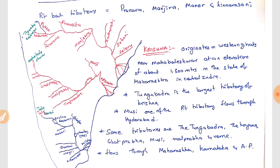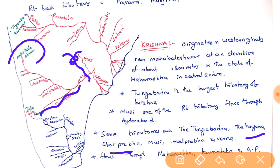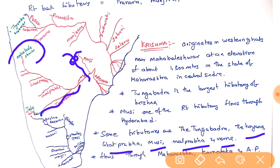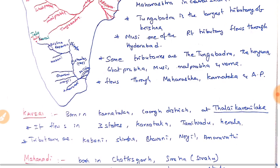Krishna river originates at Mahabaleshwar in Maharashtra at a height of 1,300 meters in the Western Ghats. Tungabhadra is the largest tributary of Krishna. Other tributaries include Koyna, Ghataprabha, Musi (which flows through Hyderabad), Malaprabha, and Vardha. Krishna flows through Maharashtra, Karnataka, and Andhra Pradesh.